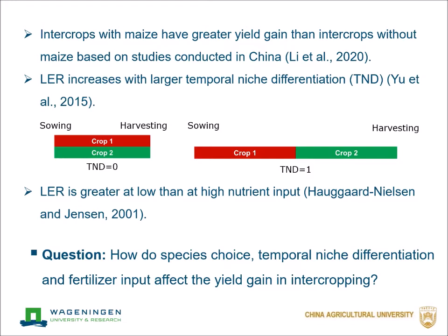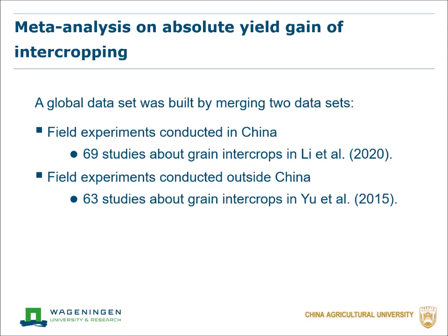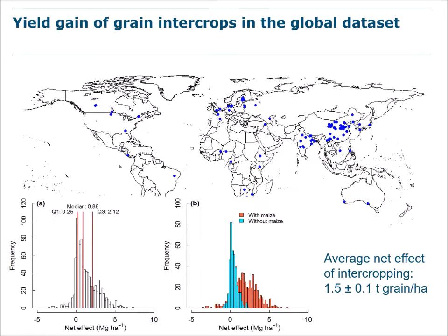A previous study also showed that LER is greater at low than at high nutrient input. So our second question is: how do management factors such as species choice, temporal niche differentiation, and fertilizer input affect the yield gain in intercropping? We conducted a global meta-analysis by building two datasets — one based on field experiments in China, and another based on field experiments conducted outside China.